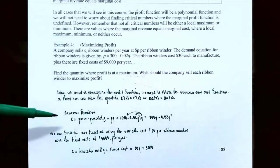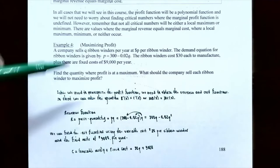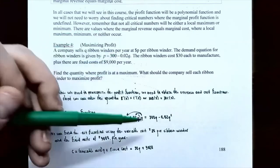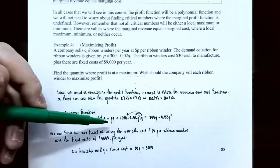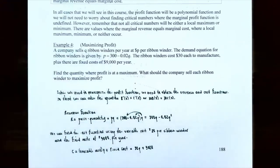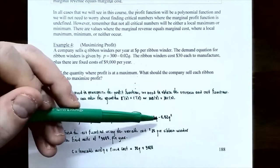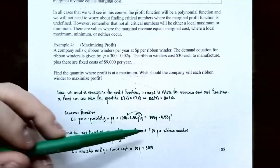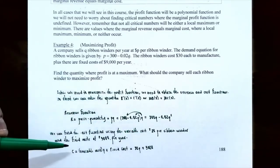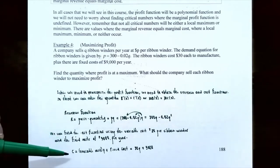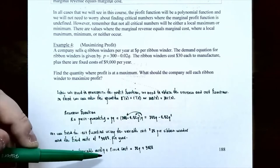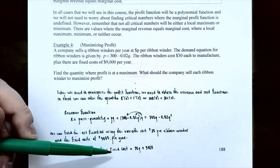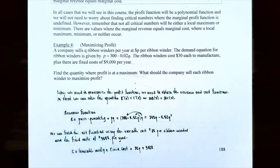Since we want to find the maximum profit, we need the revenue and cost functions. The revenue function R = p × q, and since p = 300 − 0.02q, we have R = (300 − 0.02q) × q = 300q − 0.02q². For the cost function, the variable cost is $30 per ribbon winder and the fixed cost is $9,000 per year. So C = 30q + 9,000.